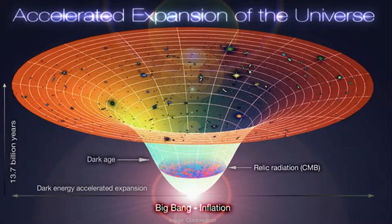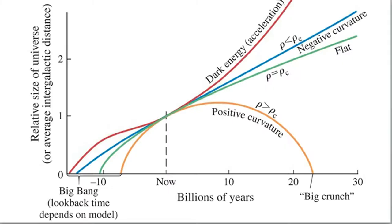Dark energy acts as a repulsive force, pushing the galaxies apart, and this expansion is actually accelerating. This graph gives us some idea of the possible fate of the universe. The accelerating dark energy model is probably the one that most scientists believe in these days, and in this model the universe continues to get colder and darker forever.